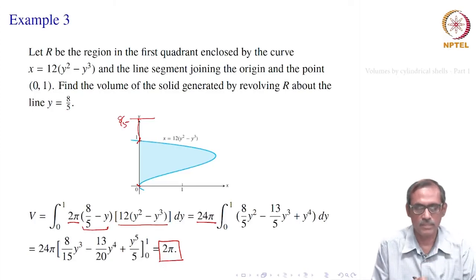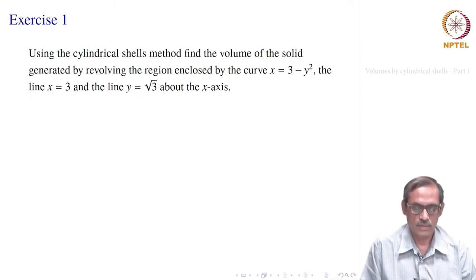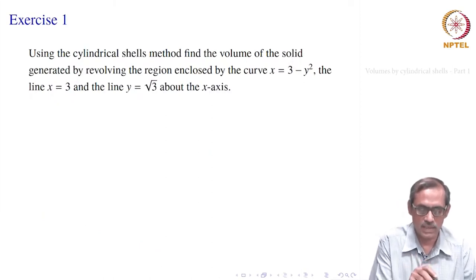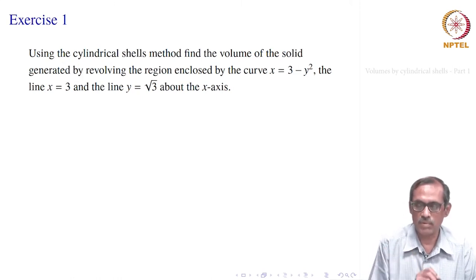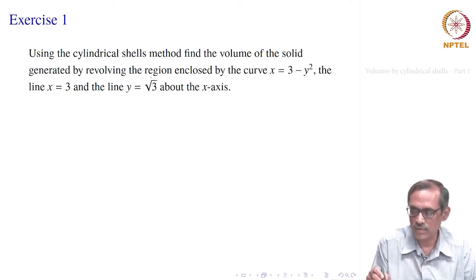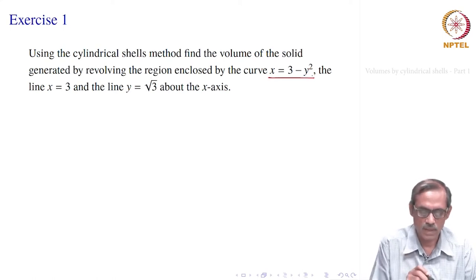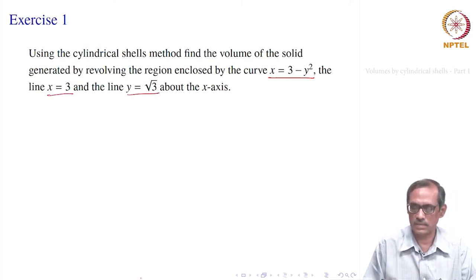Let us take a problem. It is specifically written here: using the cylindrical shells method, find the volume of the solid which is generated by revolving the region enclosed by the curve x = 3 − y², the line x = 3, the line y = √3, about the x-axis.